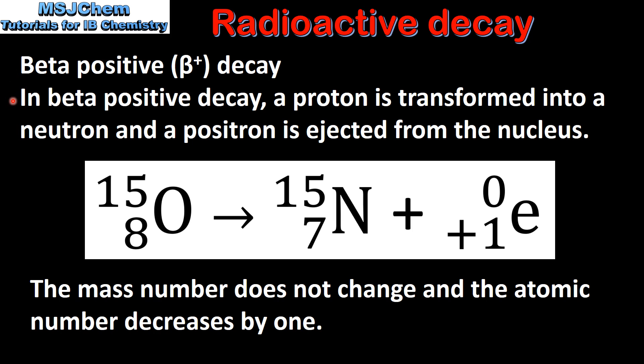In beta positive decay a proton is transformed into a neutron and a positron is ejected from the nucleus. In this nuclear equation we have the beta positive decay of oxygen-15. The products are nitrogen-15 and a positron which is a positive electron.